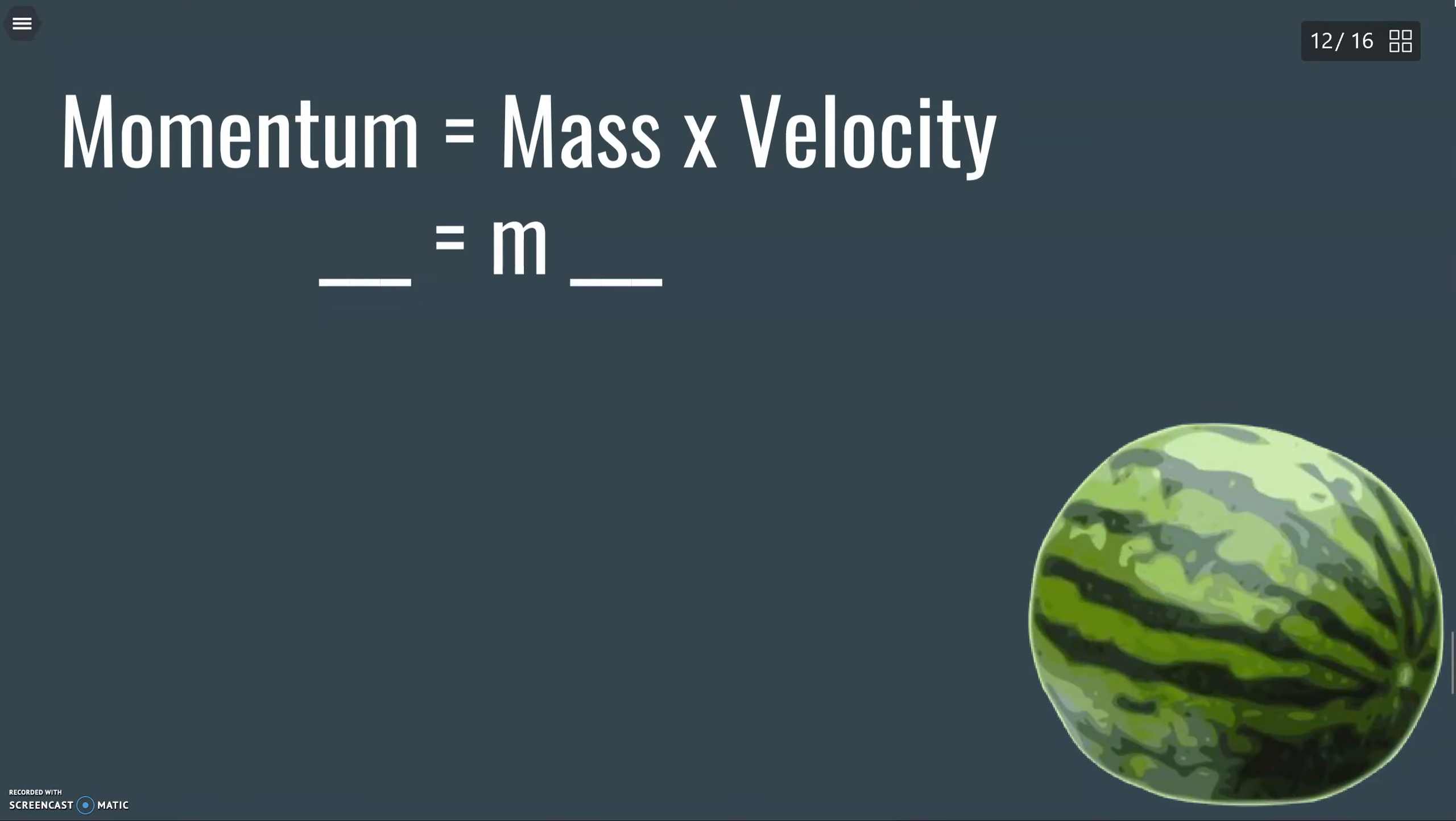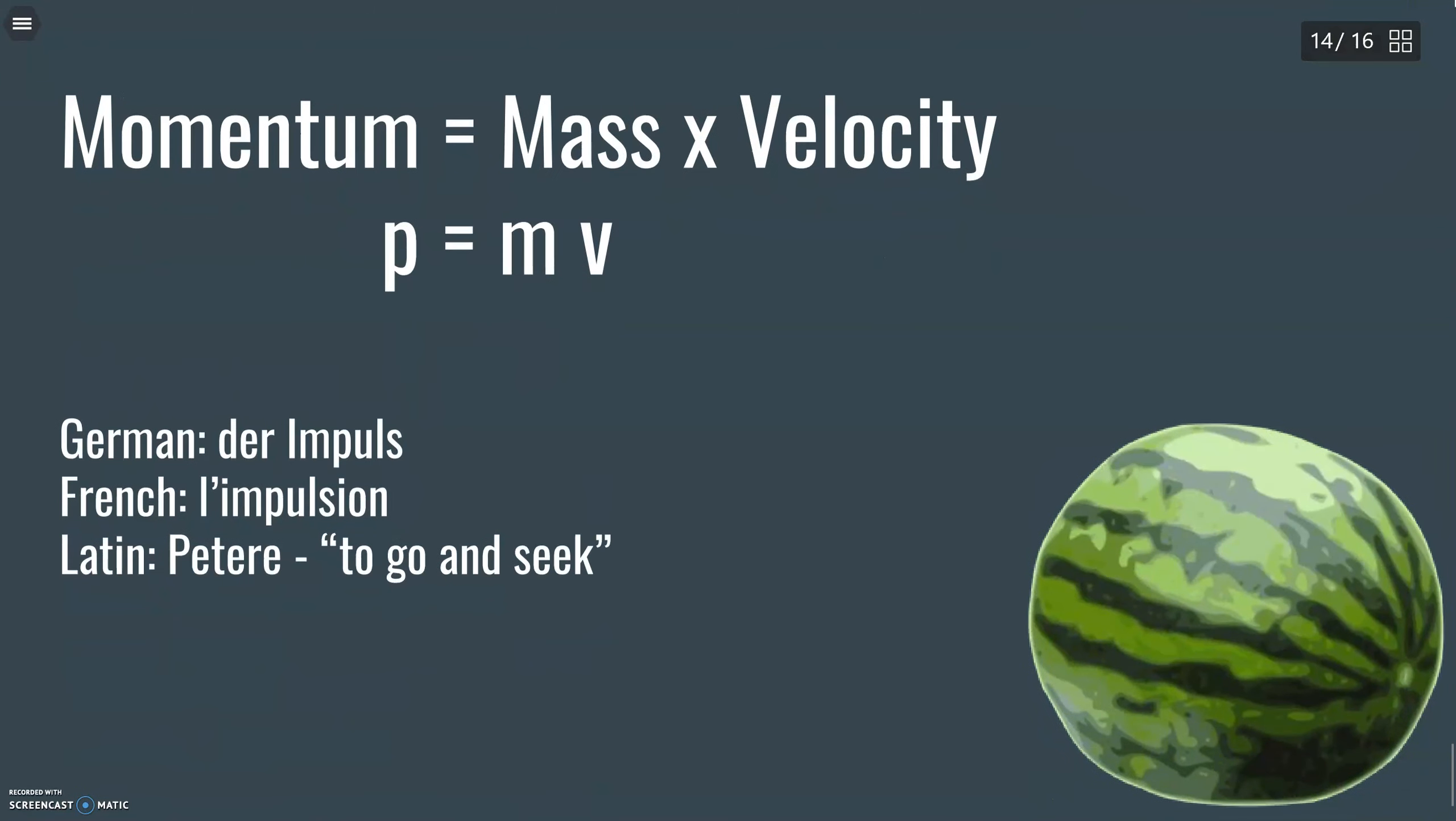So when we're writing this algebraically, mass, m, that makes sense. Velocity, v, that makes sense. Momentum, p, that... no, no, that doesn't really make sense. Well, there's some language stuff here to deal with.